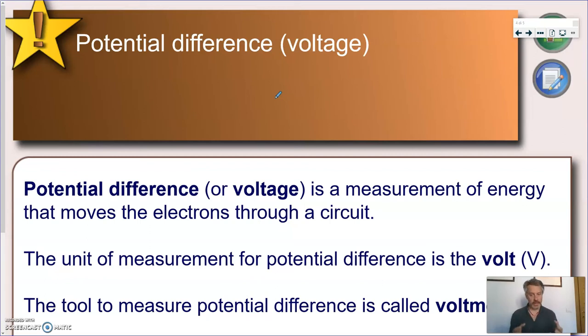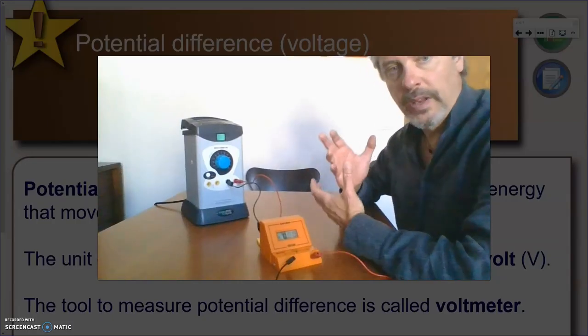The symbol, again, not surprising, is a big V, and again, not surprisingly, the tool that we can use in order to measure potential difference is called the voltmeter.